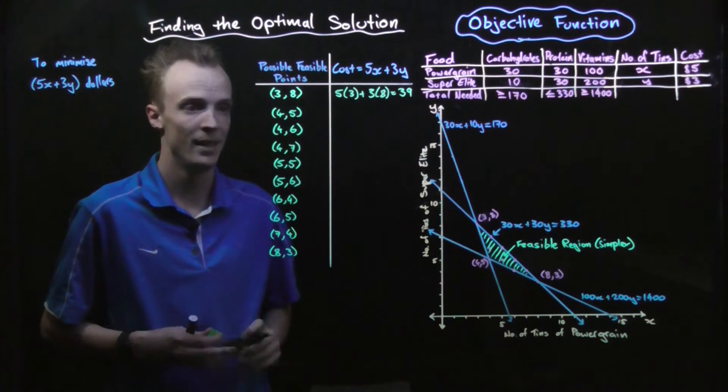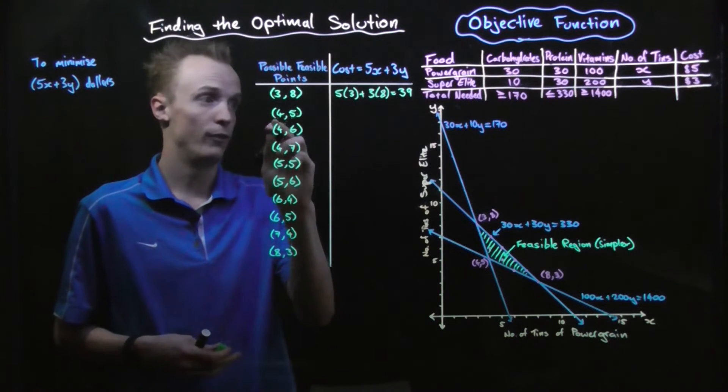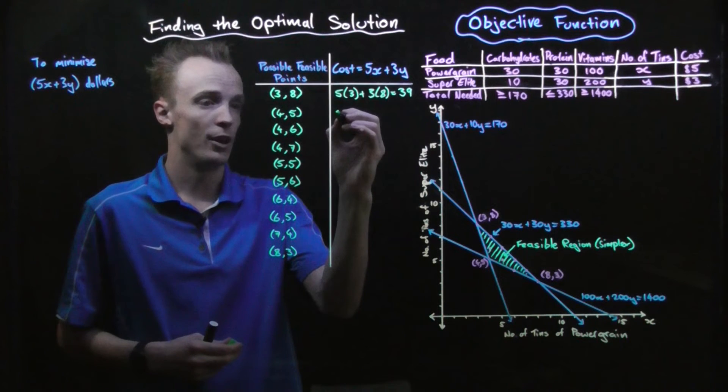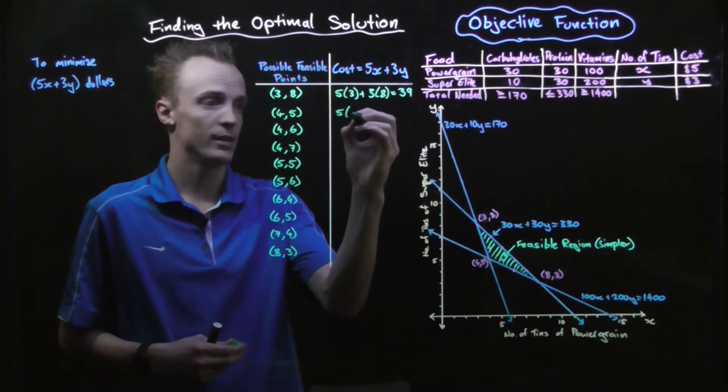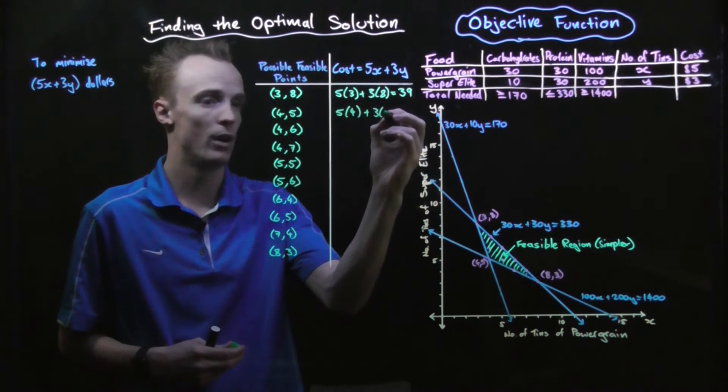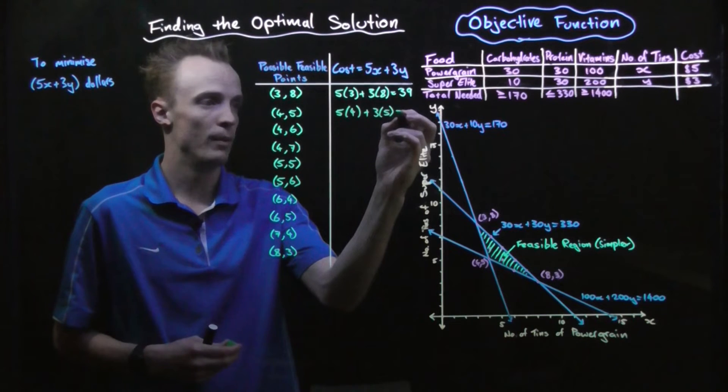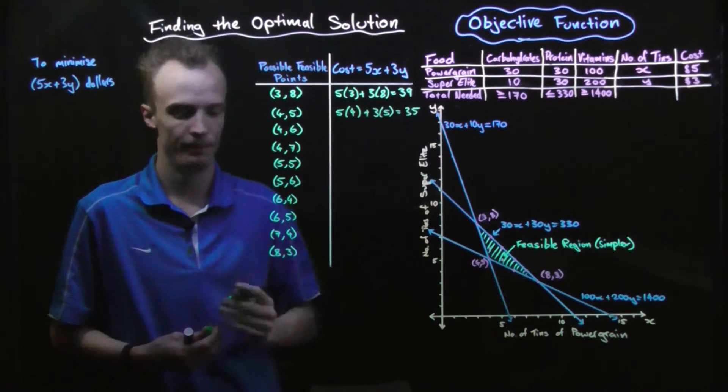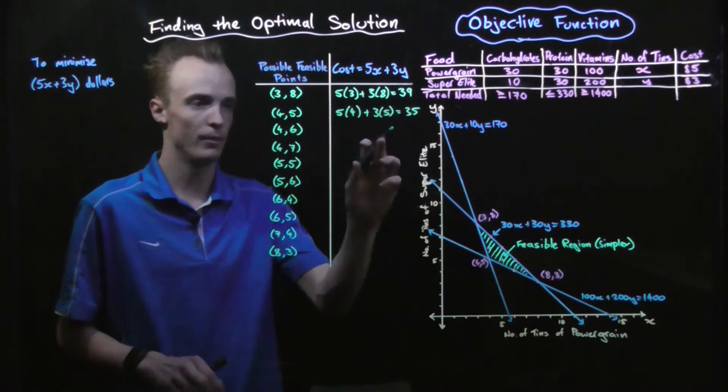In the second one, we've got four tins of power grain and five tins of super elite. So it would be 5 times our x of 4 plus 3 times our y of 5. When we do that, that is equal to $35. And we can continue this for the remainder of them.